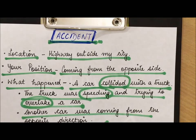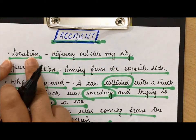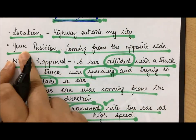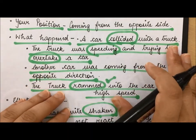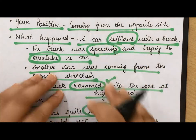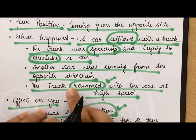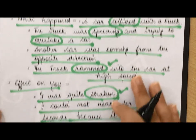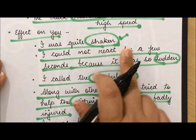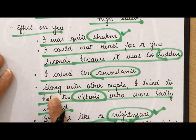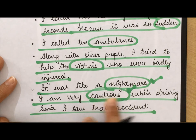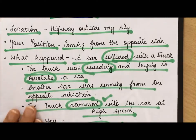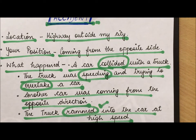Let's have a quick recap. The location of the accident: a highway outside my city. My position: coming from the opposite direction. What happened: a car collided with a truck — the truck was speeding, trying to overtake, another car came from the opposite direction, and they had a collision. The effect on me: I was quite shaken, could not react quickly, called an ambulance, tried to help victims, it was like a nightmare, and now I am very cautious while driving.